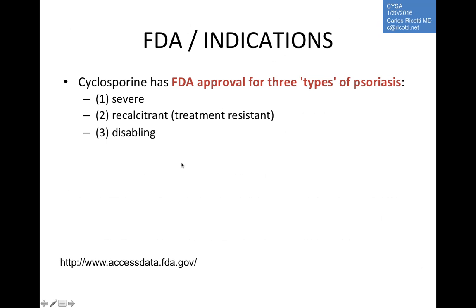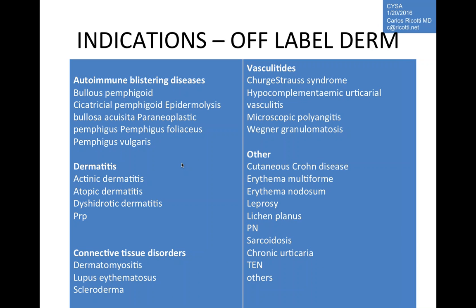The only FDA-approved indication in dermatology is severe recalcitrant disabling psoriasis. All other uses, including atopic dermatitis, are off-label. Anything T-cell related can potentially be treated — vasculitis, bullous disorders, rosacea (topical cyclosporine), chronic urticaria, papular urticaria, and connective tissue disorders — though we now prefer other agents like CellCept.